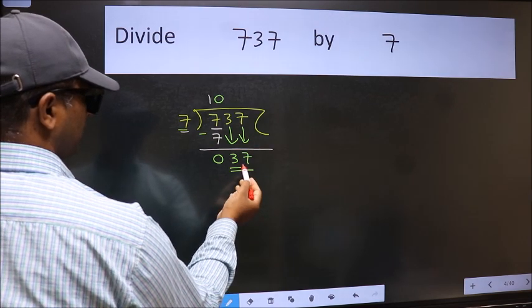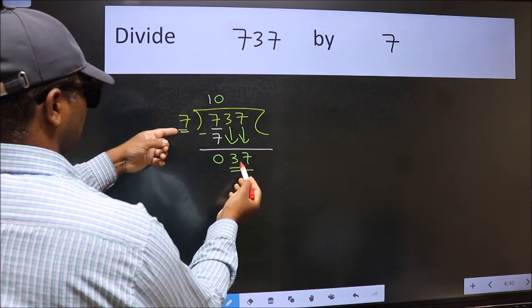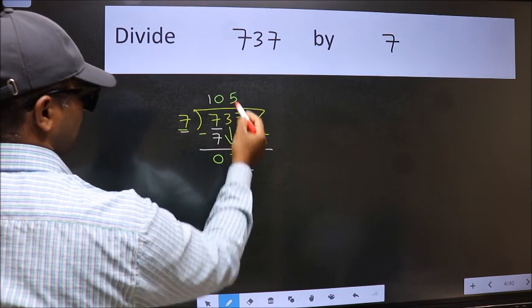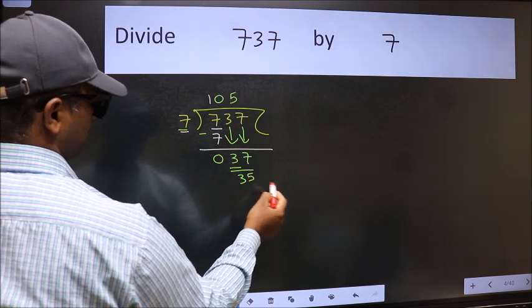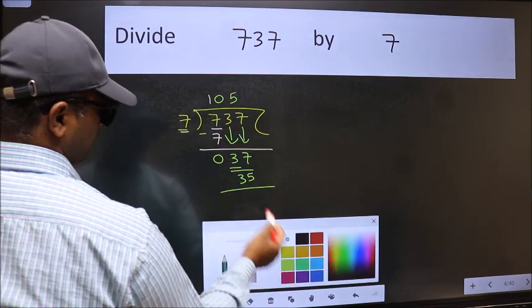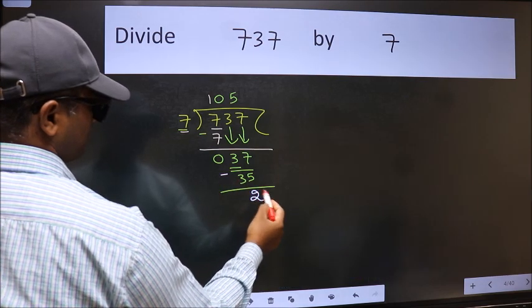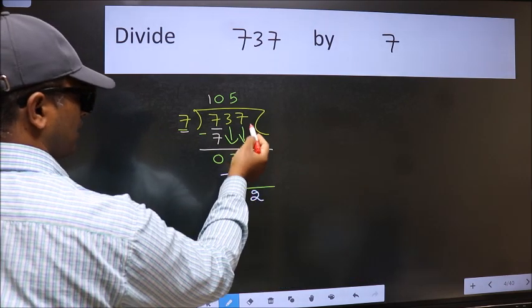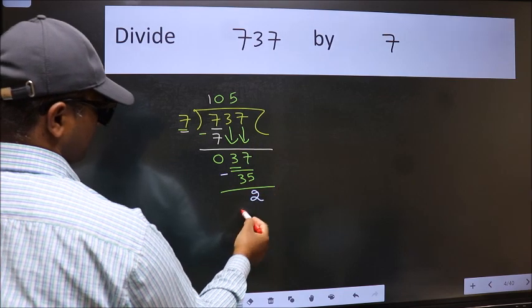Now 37, a number close to 37 in the 7 table is 7 times 5 is 35. Now we should subtract. We get 2. No more numbers to bring down, so we stop here.